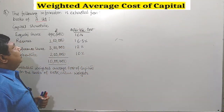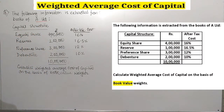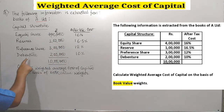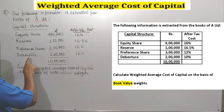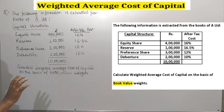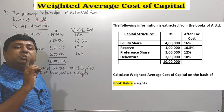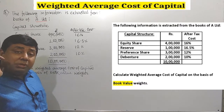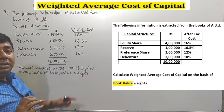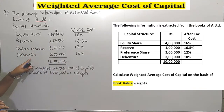Let's read the example. The following information is extracted from the books of A Limited. Capital structure: equity share is 4 lakhs rupees, reserve is 1 lakh rupees, preference share is 3 lakhs rupees, and debenture is 2 lakhs rupees — all together 10 lakhs rupees. That means the total capital structure of A Limited is segregated between 4 specific financial instruments: equity share, retained earnings or reserve, preference share, and debenture.